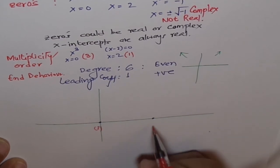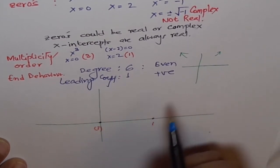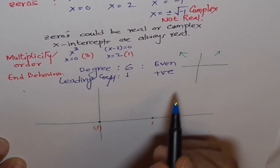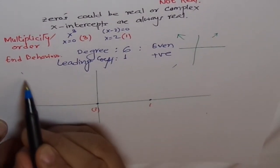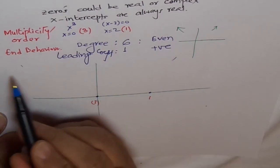And the second zero is at two, and the multiplicity is just one. End behavior is even, so the graph will come from here and go there, quadrant two to quadrant one.